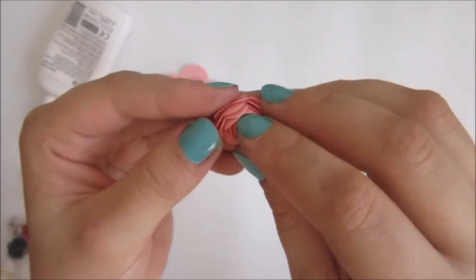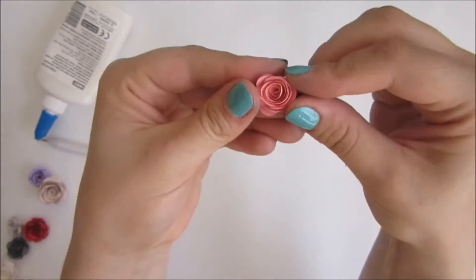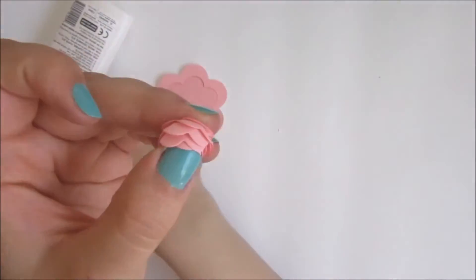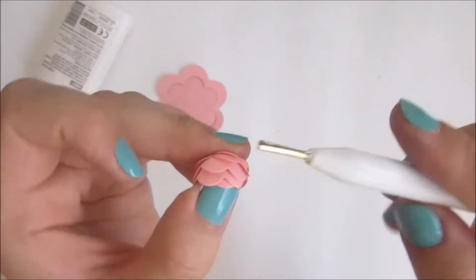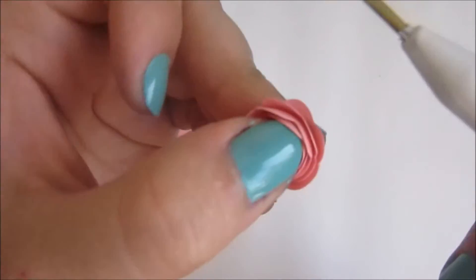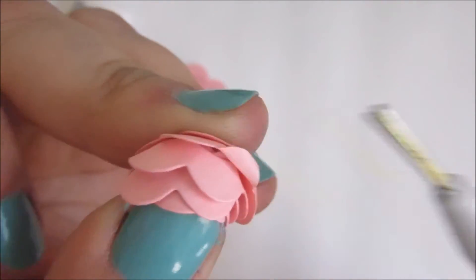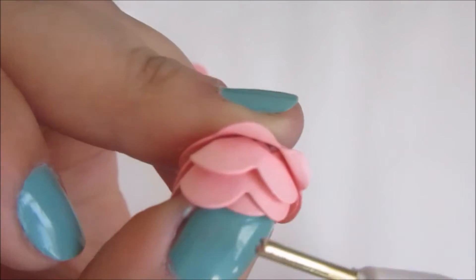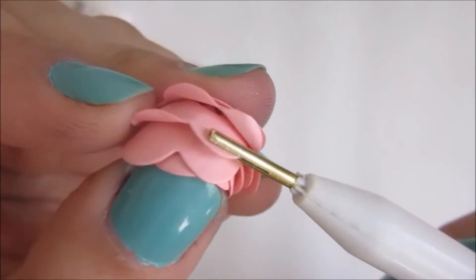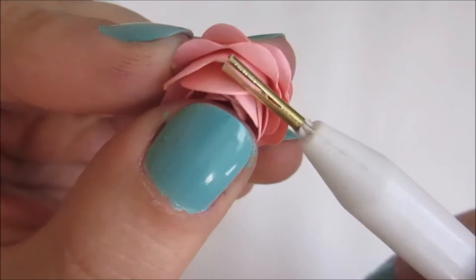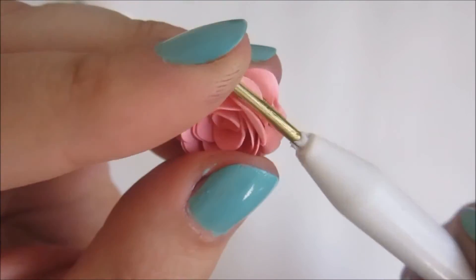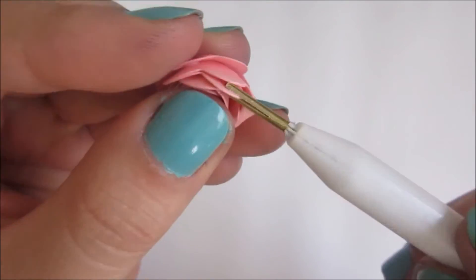While you are holding it, we are going to use our quilling tool and play with the edges to make it look natural from the outside. Play a little bit with the petals till you get the perfect shape you like.